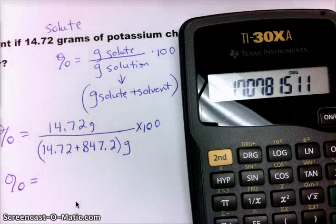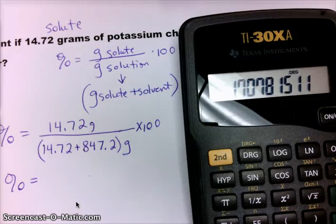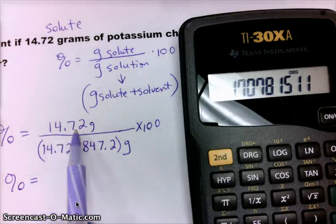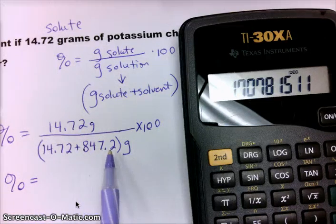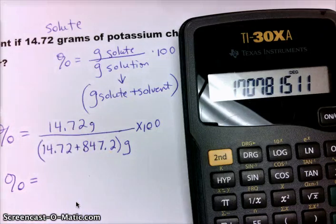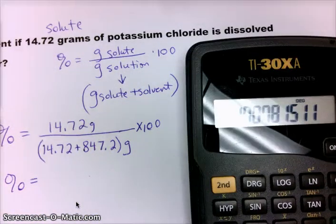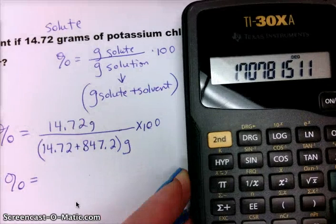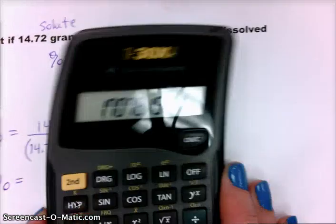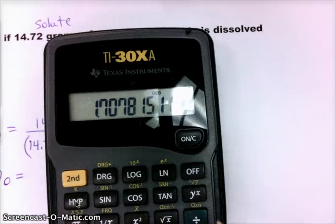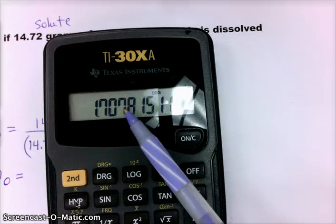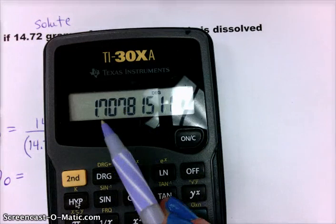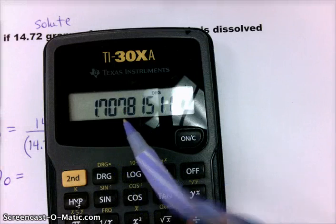And I get a big long number. Let's look back at our sig figs. We have 4 in our grams of solute and then 4 in our grams of solvent. So it looks like 4. So this percentage is going to be 1.707 and that 8 is actually going to round the 7 up. So it's going to be 1.708 percent.